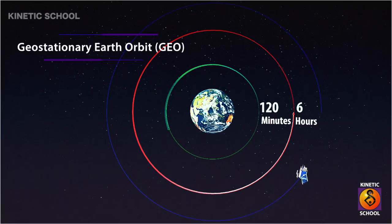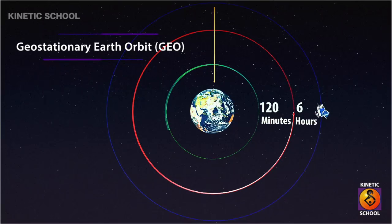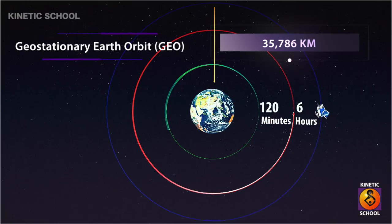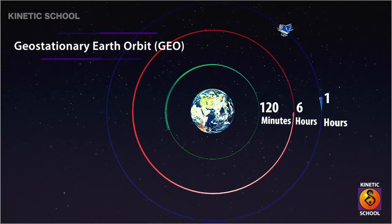A geostationary satellite is an Earth-orbiting satellite placed at an altitude of approximately 35,786 kilometers directly over the equator, that revolves in the same direction the Earth rotates — that means west to east. This satellite takes 24 hours to orbit the Earth.